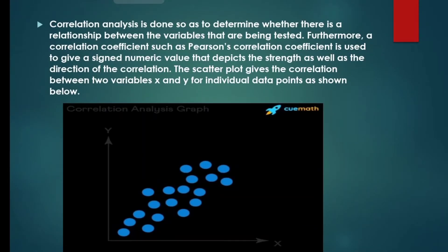Correlation analysis is done to determine whether there is a relationship between the variables being tested. Furthermore, a correlation coefficient such as Pearson's correlation coefficient is used to give a numeric value that depicts the strength as well as the direction of the correlation.